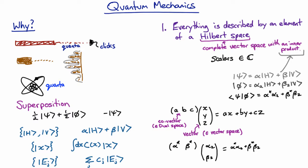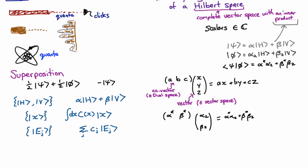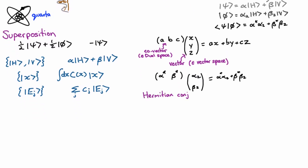Now this process of going from a vector to a co-vector is called Hermitian conjugation, and after you've done Hermitian conjugation you've taken the Hermitian conjugate. So the Hermitian conjugate of this state here